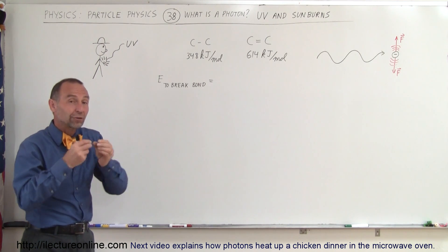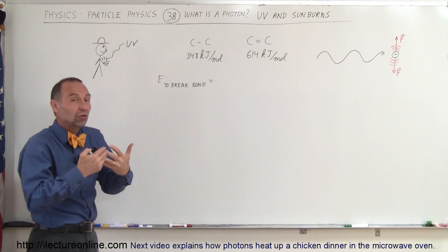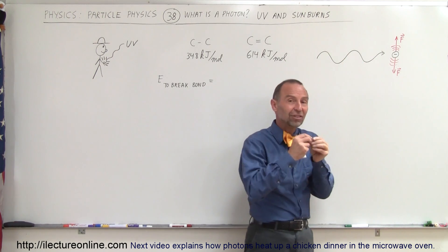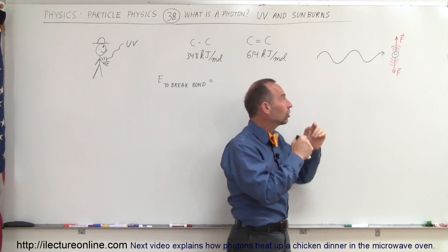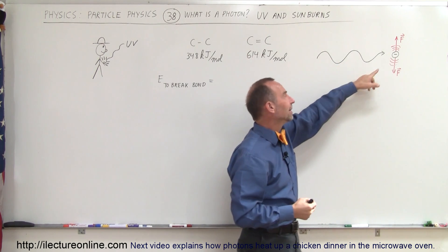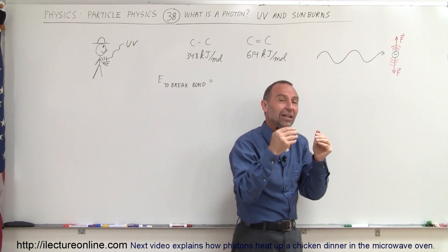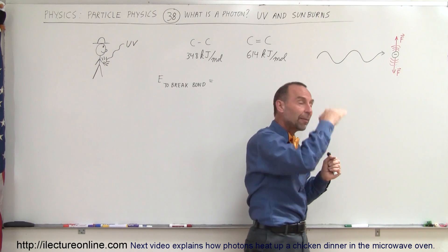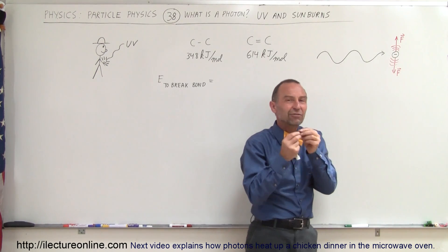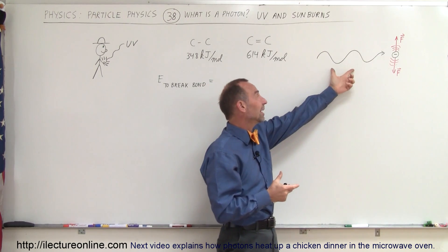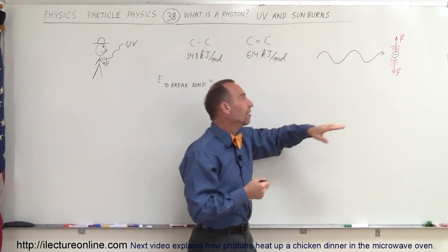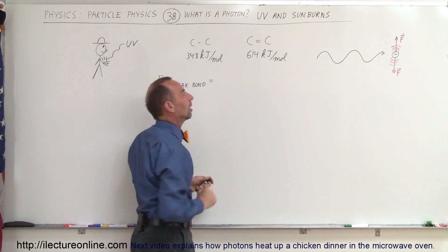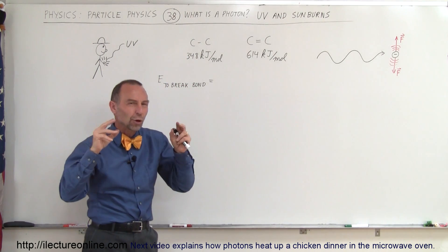Let's find out what energy is required to break a single bond. The way photons would cause those bonds to break is when a photon hits our skin, it causes electric field and magnetic field oscillations that exert forces on the electrons it passes by. That causes those electrons to oscillate up and down, and if the energy contained within the photon is sufficient, it can break the bonds in the carbon chains — and that is what causes a sunburn.